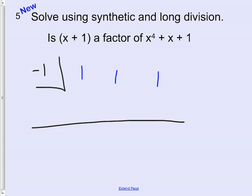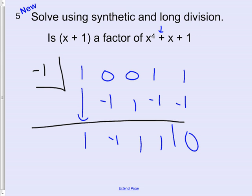1, 0, 0, 1. Why do we have to have those zeros to hold places for the spots that were skipped, that were missing terms? Okay, now we drop this 1 down here, and then 1 times negative 1 is negative 1, and then add them, negative 1, multiply them, 1, add them, 1, multiply them, negative 1, add them, 1, multiply them, negative 1, add them. Uh-oh, I went a little too fast there, huh? Oh, that's a 0. Okay, 0 times negative 1 is 0, and then it didn't work. Look at that.